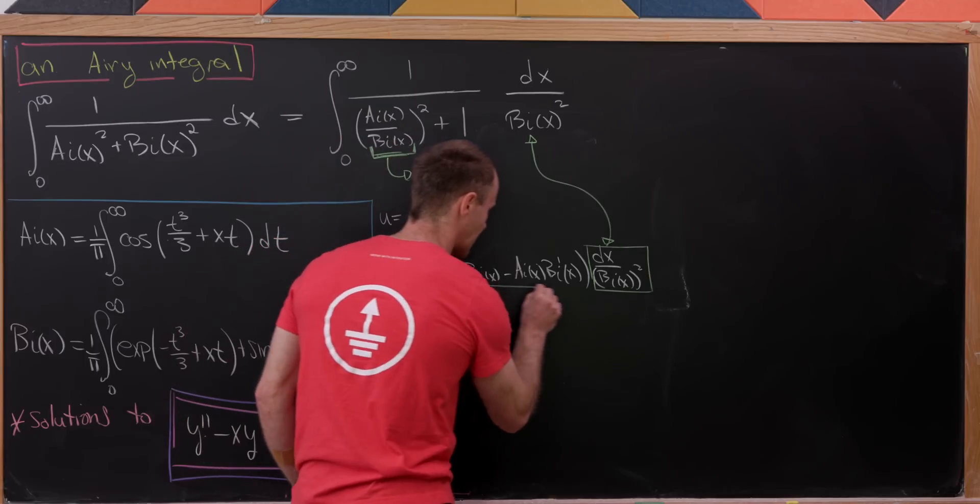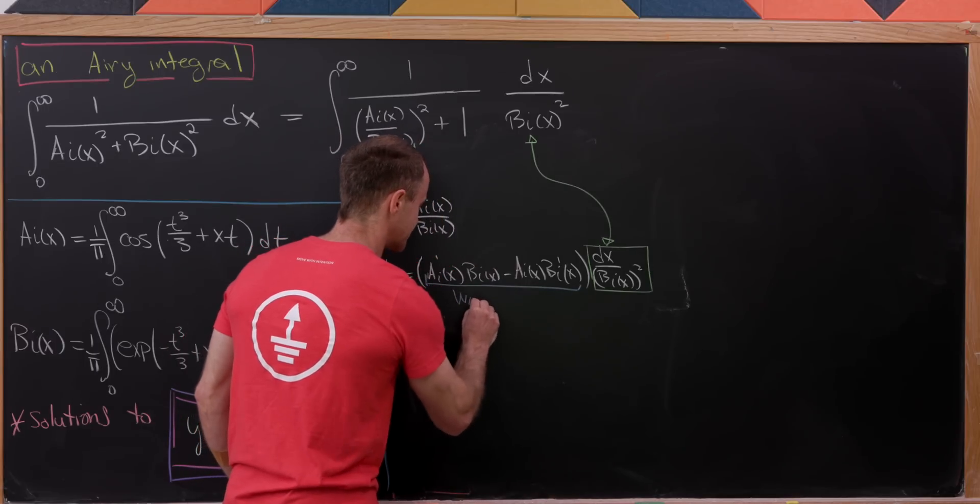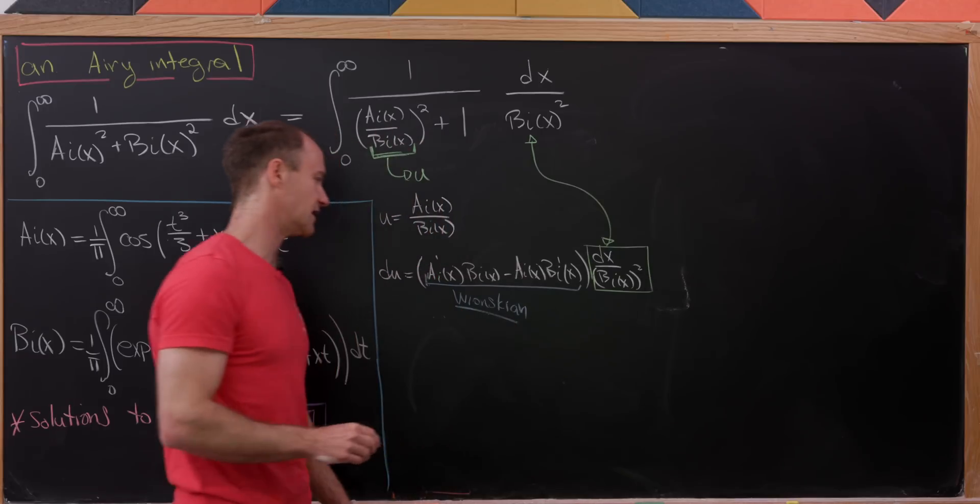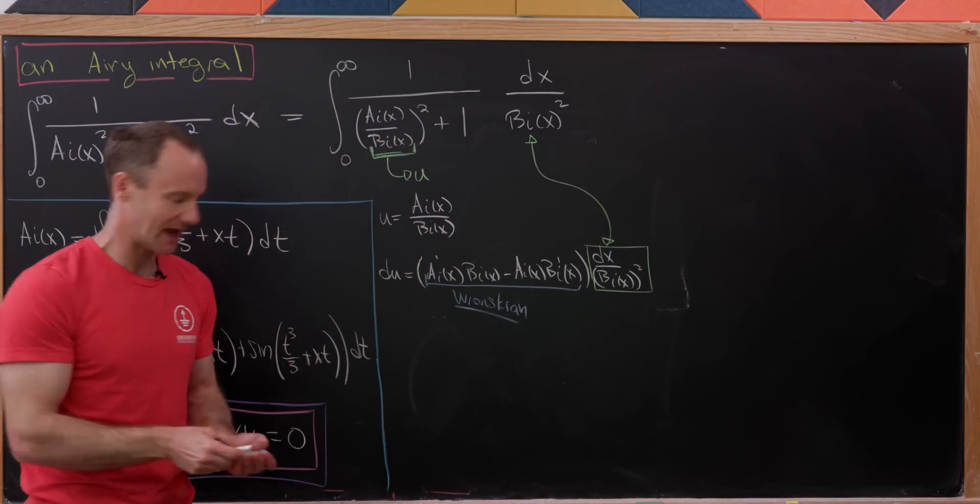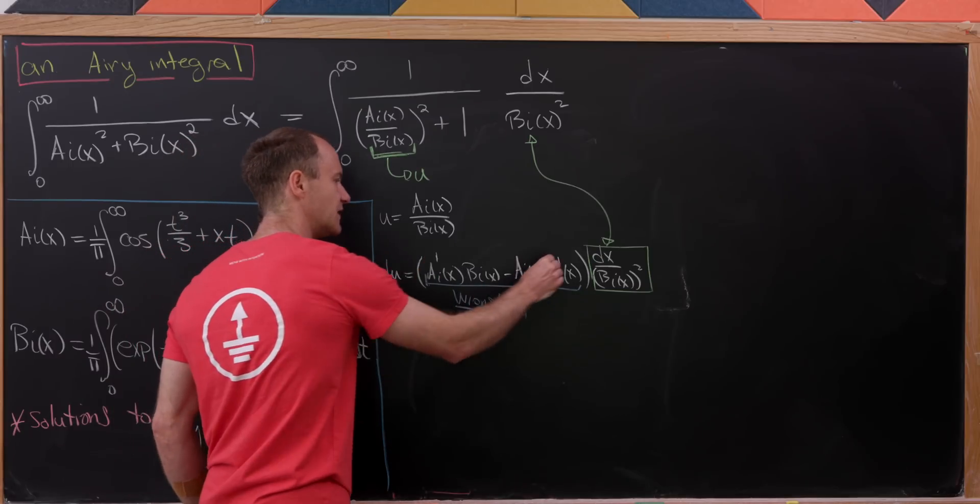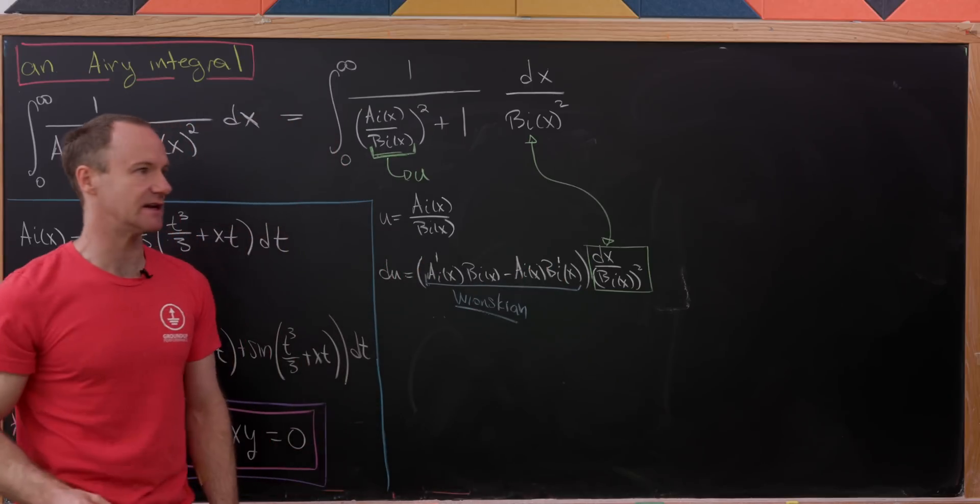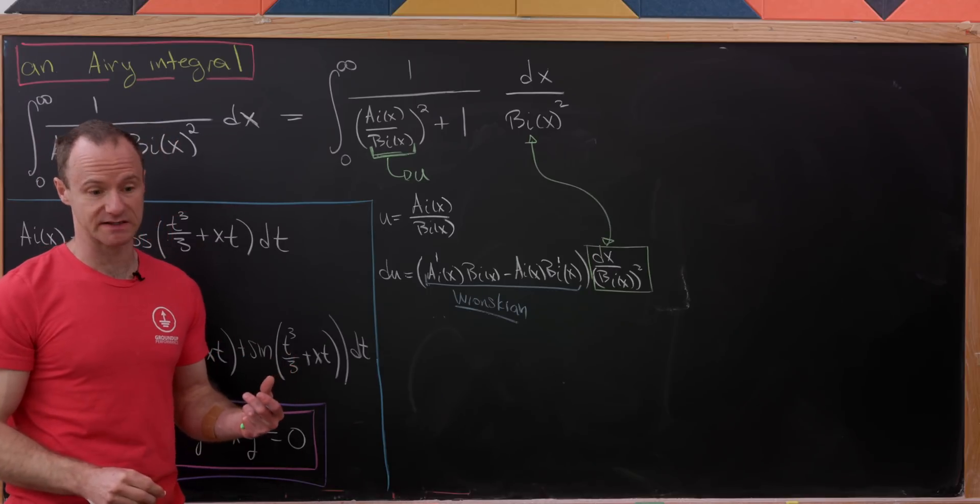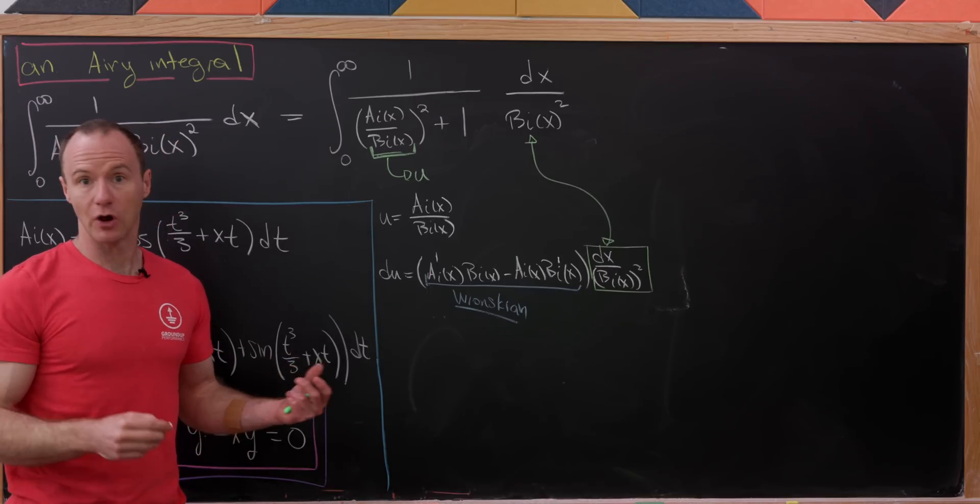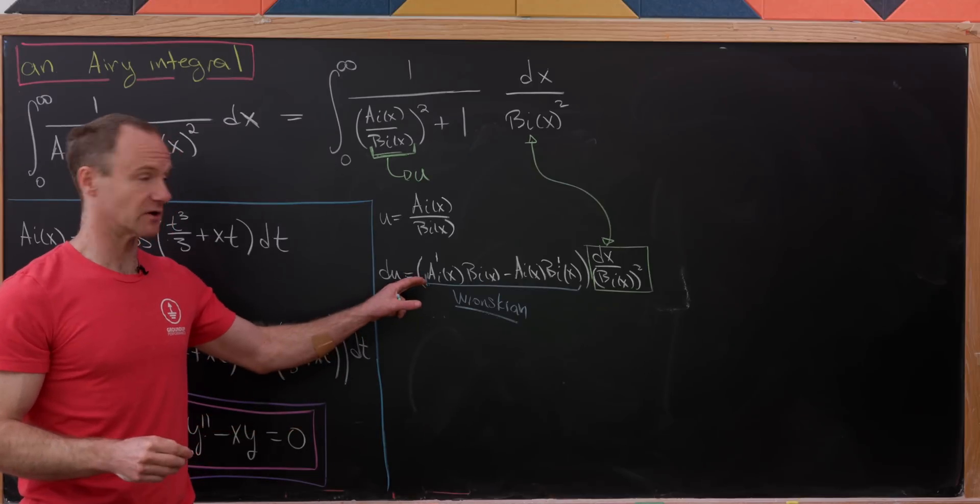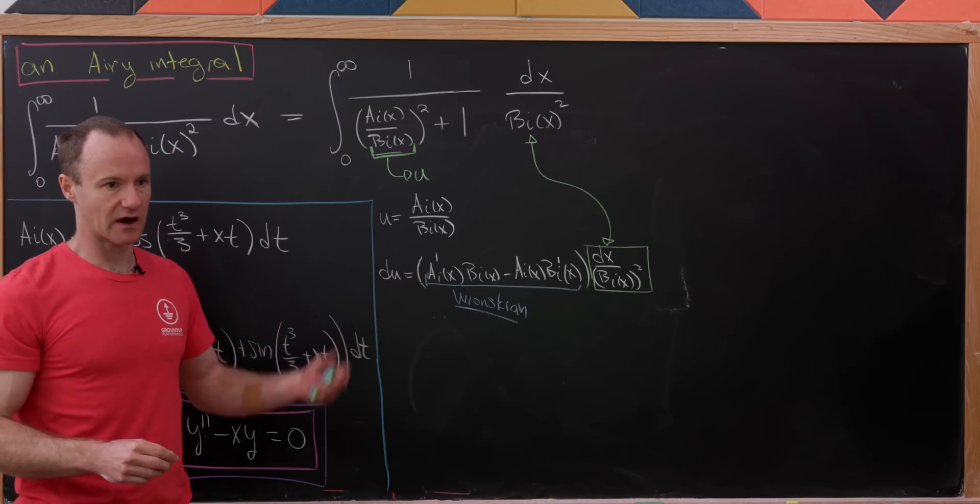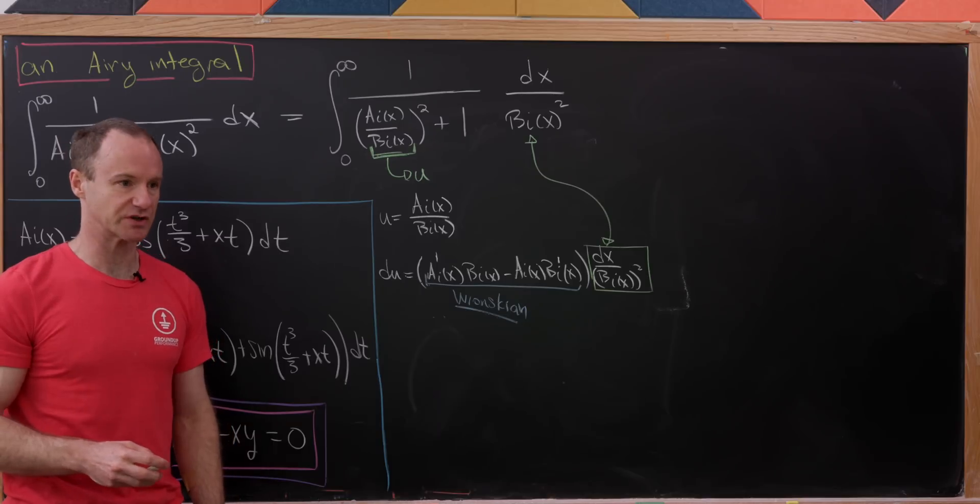But if we look carefully at this other bit, we'll see that it's exactly something called the Wronskian of the functions AI and BI. And there's this really cool identity called Abel's identity, which allows you to calculate the Wronskian without knowing the functions. We know the functions, so we calculated the Wronskian this way. But we can also calculate the Wronskian from the differential equation.